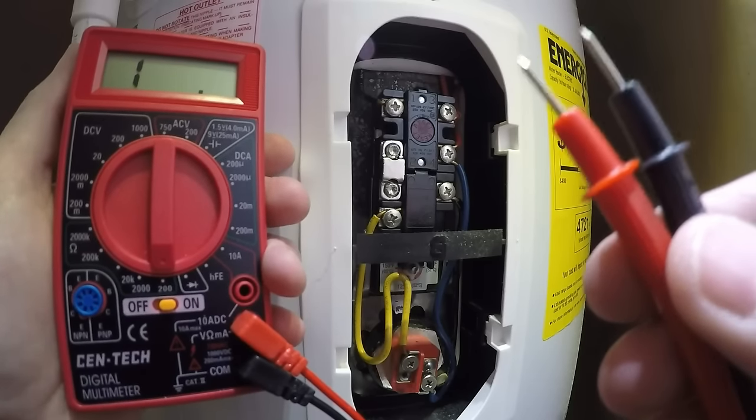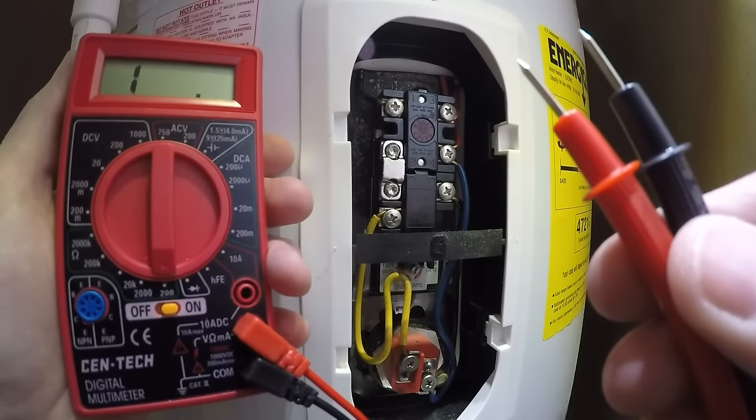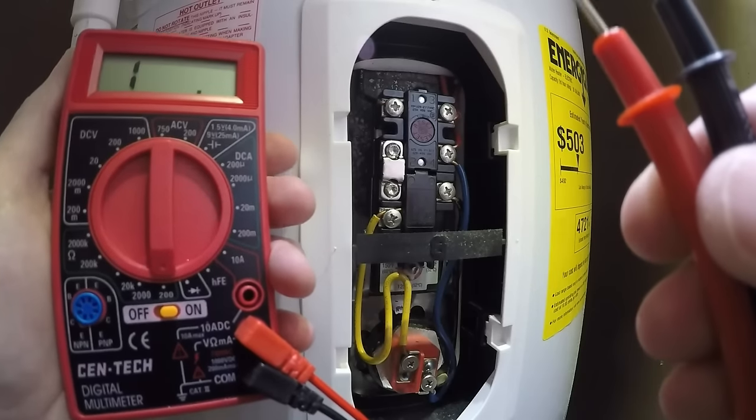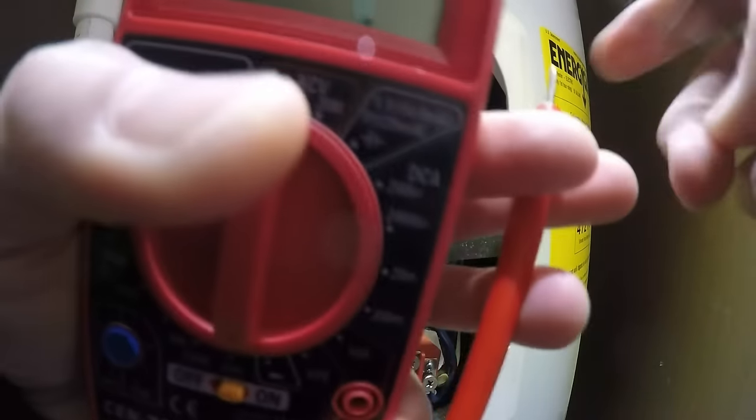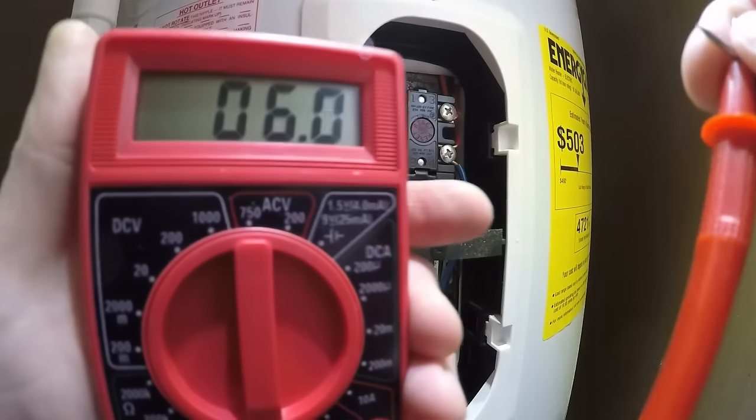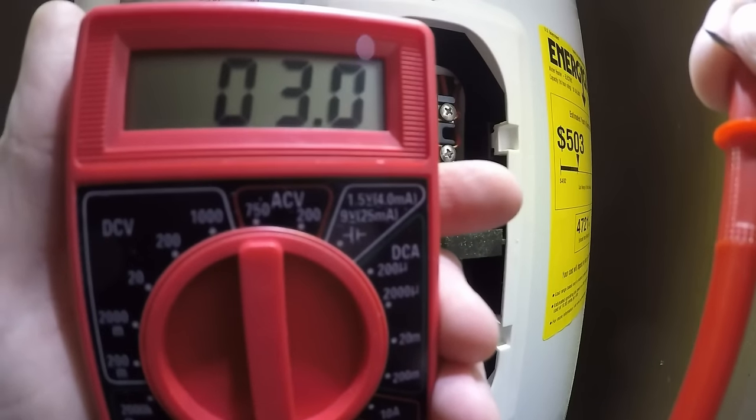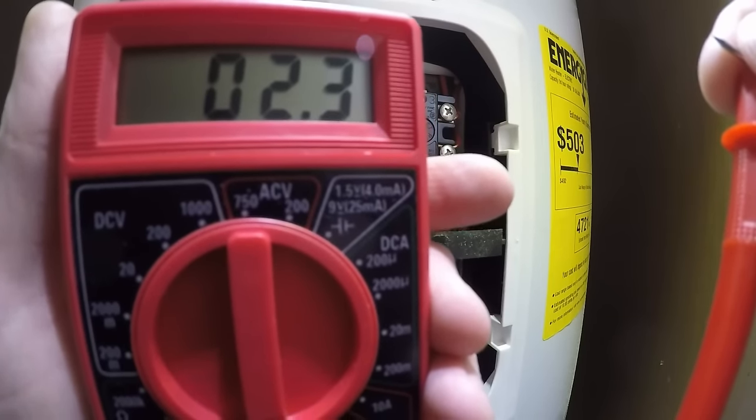Before I go any further, I just want to test the multimeter here and make sure it is working, that my leads don't have bad wires or something like that. I have it on 200 ohms right now. I'm going to touch the probes together and I should get a reading of something from two to five ohms. So there it is. I know that my multimeter is good.